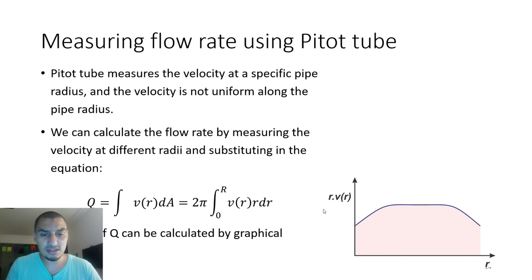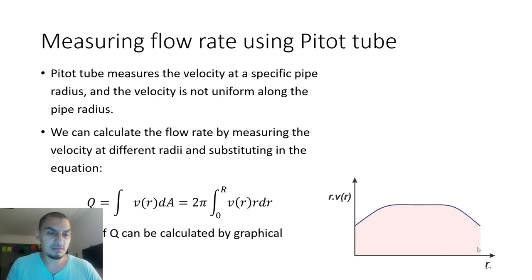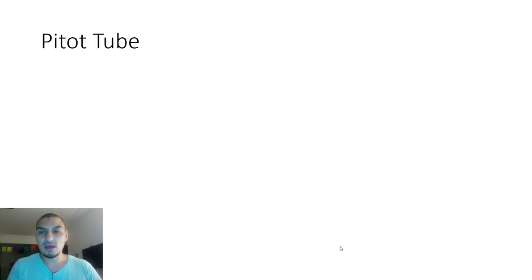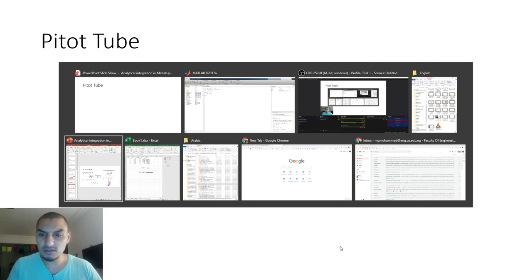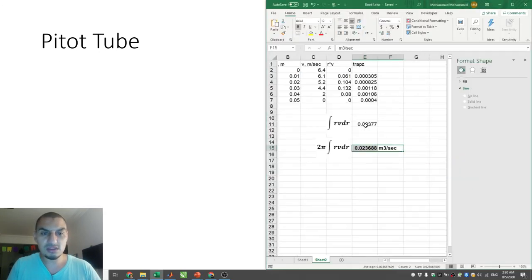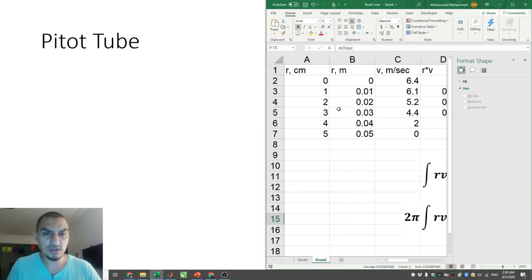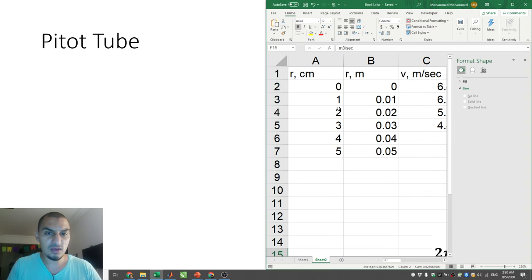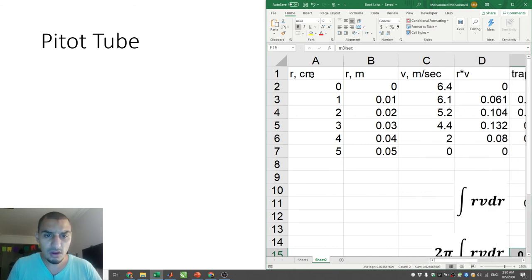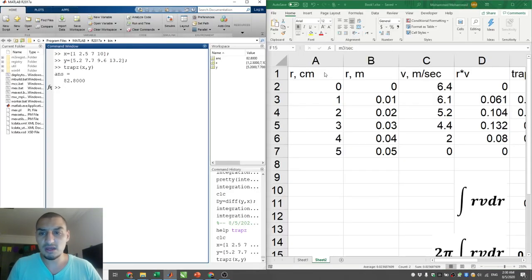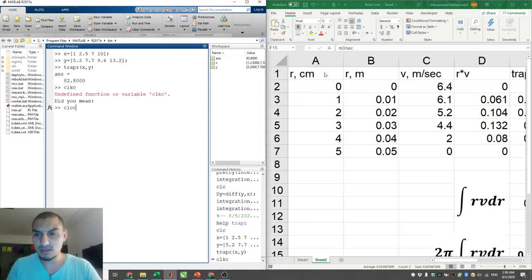To do the graphical integration, put r on the x-axis and plot r·V(r), then find the area. The curve starts at zero radius with some velocity, and ends at zero velocity at the wall, so both endpoints tend toward zero. I have some tabulated data here — I did the calculations in Excel to compare. The data has r in centimeters and V in meters per second.